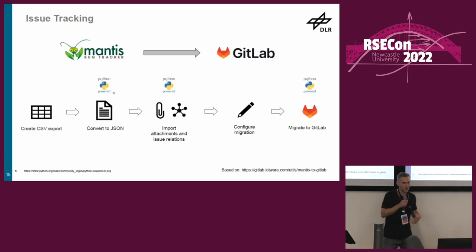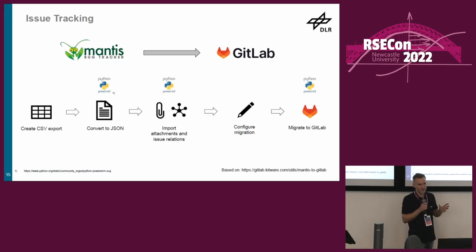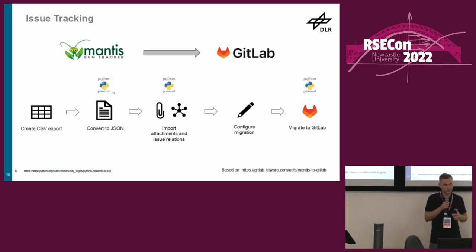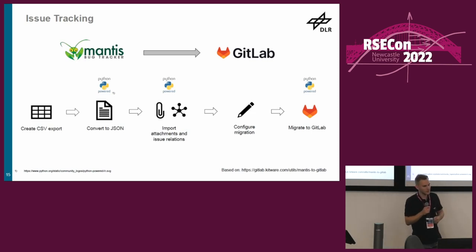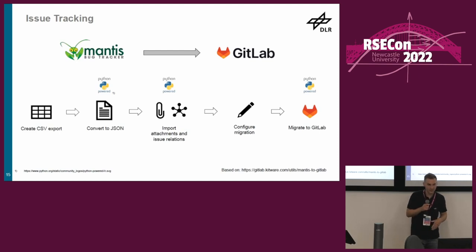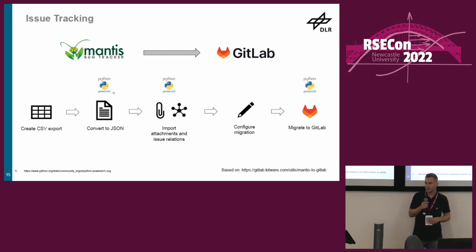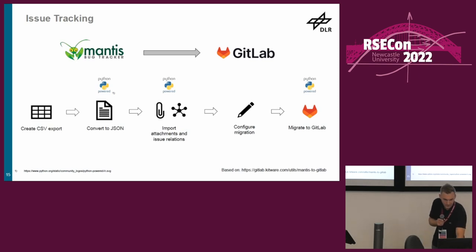The last step is migrating our Mantis bug tracker to GitLab. It's based on a tool provided by Kitware and forked by colleagues at DLR. It's all based on a CSV export — it converts issues to JSON, downloads all attachments and issue relations, and pushes them via the GitLab API to GitLab. It's quite straightforward.